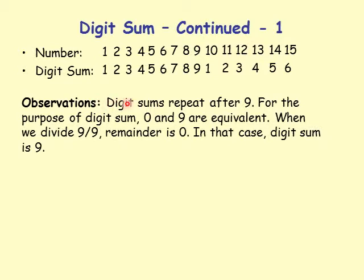Key observation: digit sums repeat after 9. The sequence is 1, 2, 3, 4, 5, 6, 7, 8, 9, then 1, 2, 3, 4, 5, 6 — it's periodic with a period of 9. Each period contains the numbers 1 through 9 in sequence.